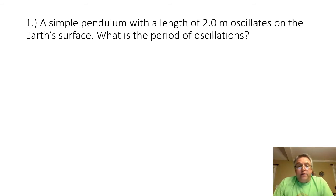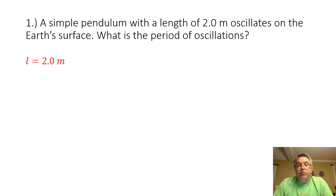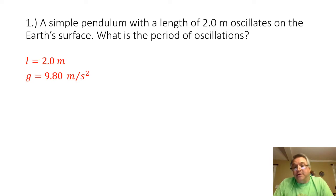In this video we are going to be looking at the solutions to the college prep pendulum practice problems. Problem one: a simple pendulum with a length of 2.0 meters oscillates on the Earth's surface. What is the period of oscillations? I'm given the length of the pendulum — 2.0 meters — and my gravitational acceleration is 9.80 meters per second squared because I'm on the Earth's surface. Remember, the pendulum is always going to be on Earth unless specified otherwise.